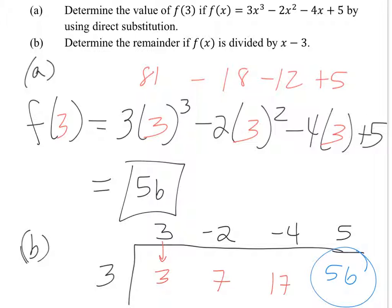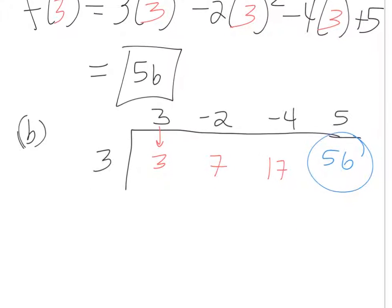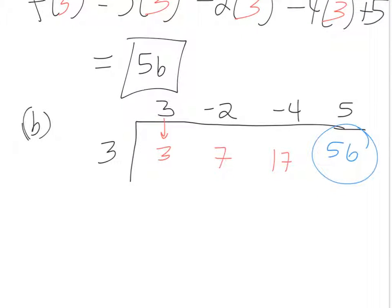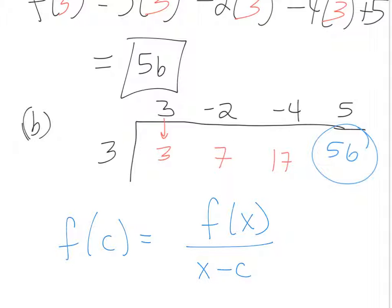Mathematically, how would you write that with symbols? F of c equals the remainder when f(x) is divided by (x minus c). So the remainder of f(x) divided by (x minus c) is the same as plugging c in. When you plug in c and run it through, it's the same thing as dividing by x minus c and finding the remainder.